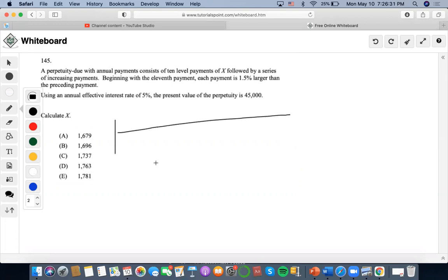Okay, so this is a perpetuity due. They're starting from zero. There are 10 payments. So the last would end up here, and beginning with the 11th payment, which would occur at time 10, each payment is 1.015 times the preceding payment, and it goes on and on.